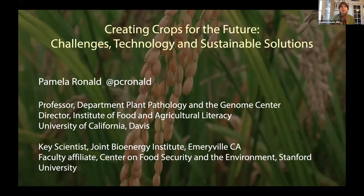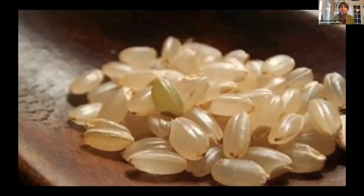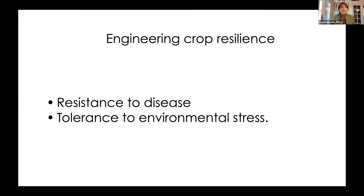If we can farm more efficiently and reduce agricultural and food waste, we can really help be part of the solution to climate change. An important goal of plant biology research is to develop crops that can survive under stressful conditions. I work on rice, which is a staple food for half the world's population, and I want to talk about work in my lab and with collaborators on engineering resistance to disease and tolerance to environmental stress — two major aspects of engineering crops for resilience.